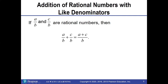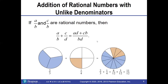When we have like denominators — remember, the denominator is the bottom number — the rule is simple: we can add rational numbers with like denominators by just adding the top values and keeping the bottom denominator the same. Then we would reduce if necessary.